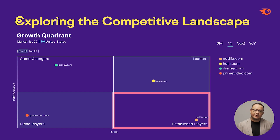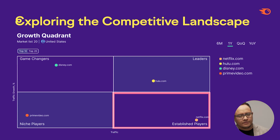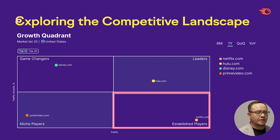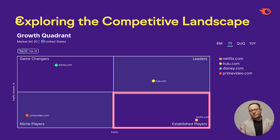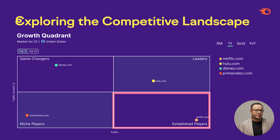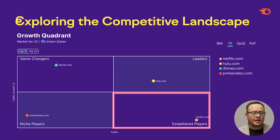Established players are companies with a significant traffic share. They take over a large part of the market but their growth rates aren't that high relative to the market overall. Established brands with a recognizable name make up most of this category. Netflix, as we see, is an established market player.